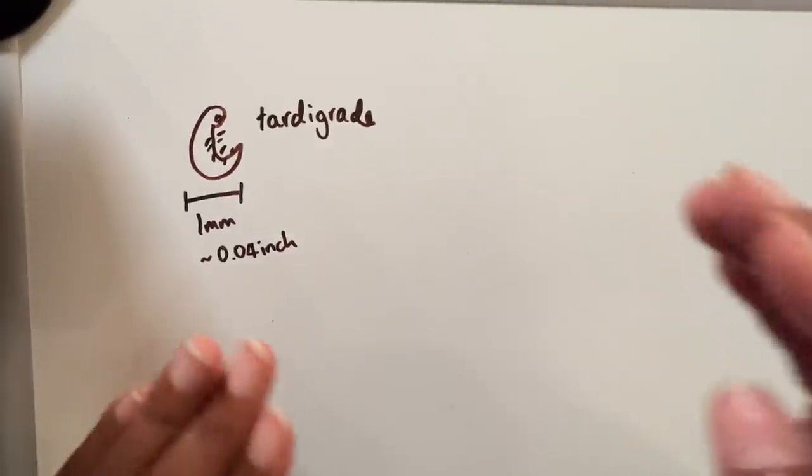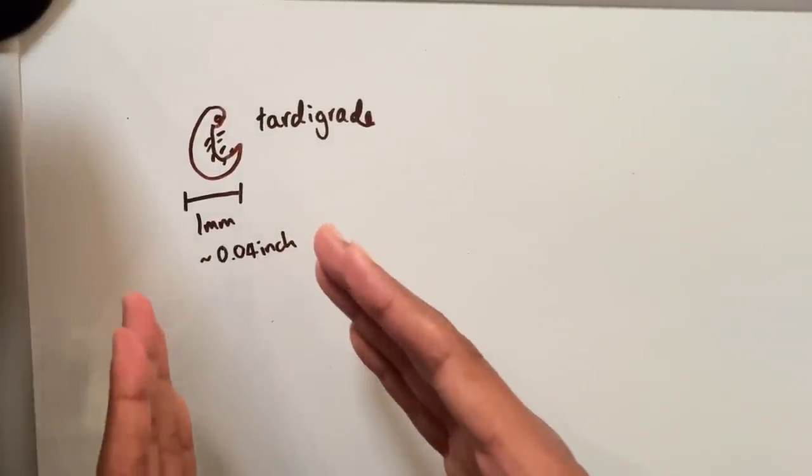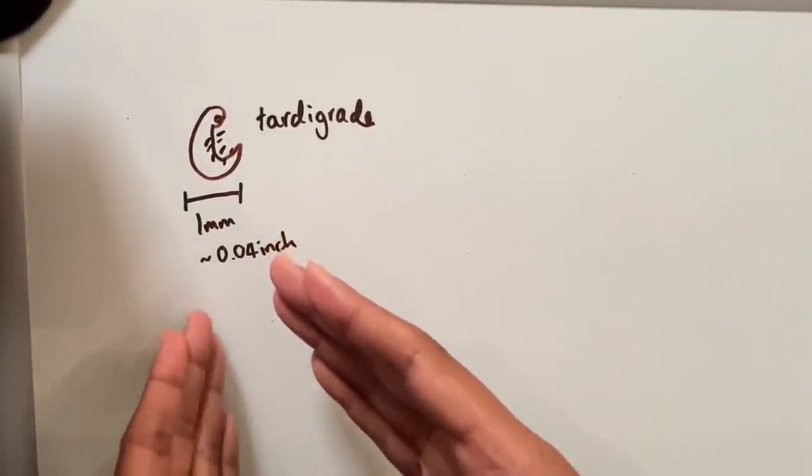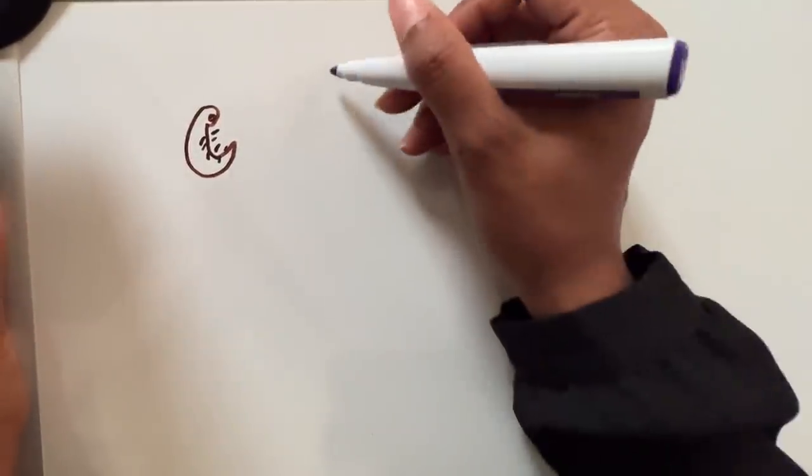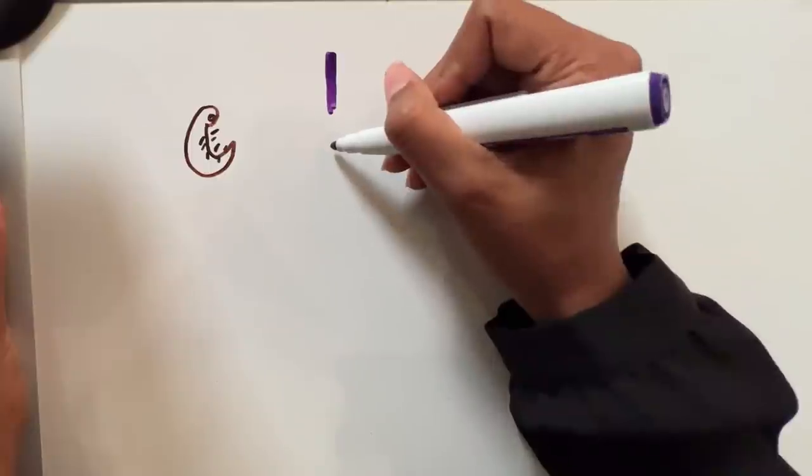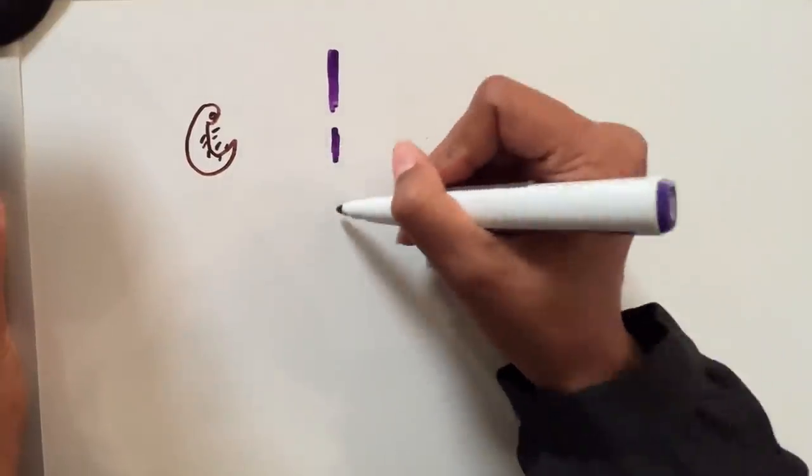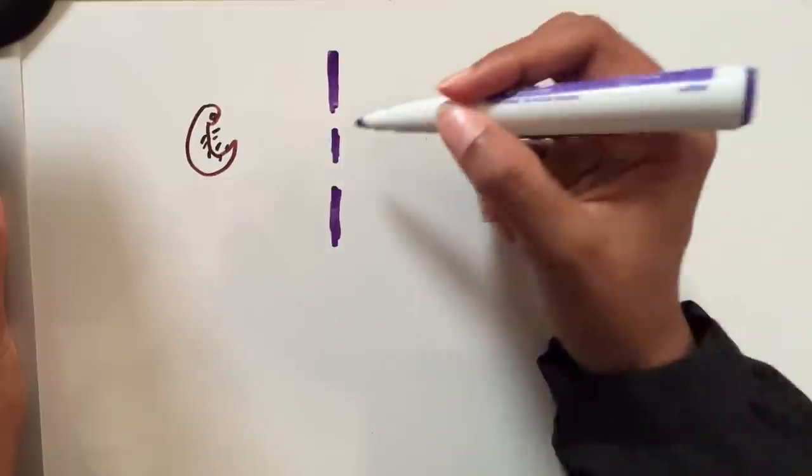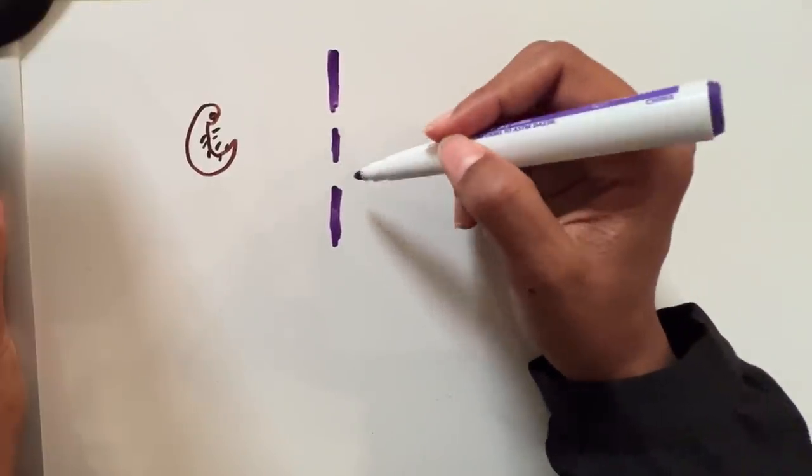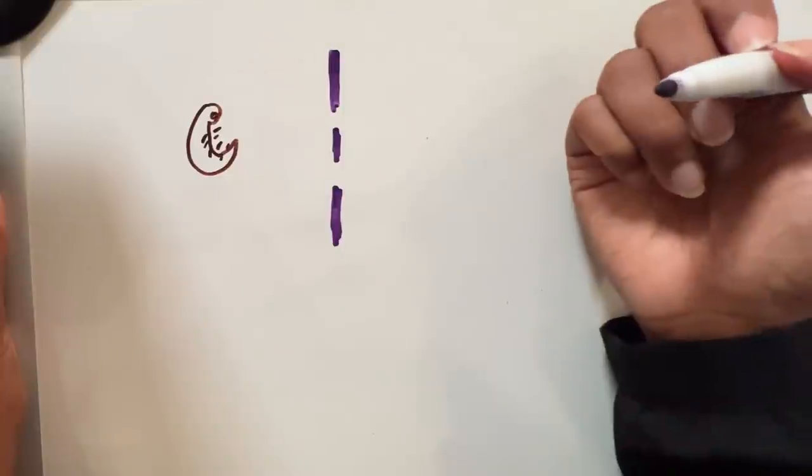We're going to use these as our example because they're small but they're not that small, and real experiments with them have been done. So all of this is feasible whether you believe in many worlds or just regular quantum mechanics. The experiment that we're going to do with our poor little tardigrade is to throw it at a wall where the wall has two openings that are big enough for the tardigrade to go through. And the question is, which of these two slits did the tardigrade go through?